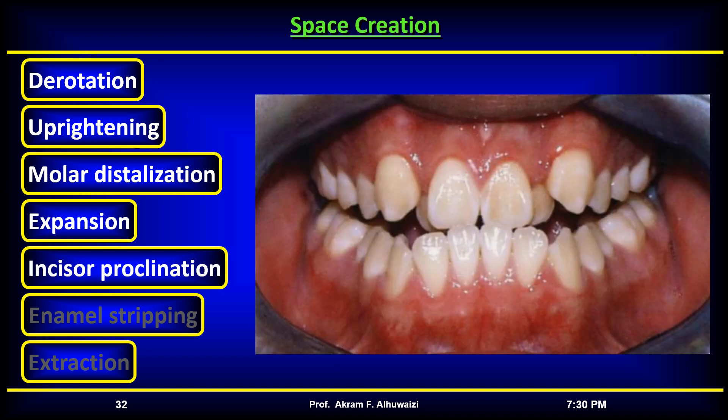Space can be created by proclining incisors, but this will be dictated by the aims of treatment. Proclining upper incisors in Class 3 malocclusion and lower incisors in Class 2 malocclusion can help correct the incisor relationship and relieve crowding at the same time. For each millimeter of incisor advancement, 2 mm of space is created within the dental arch.